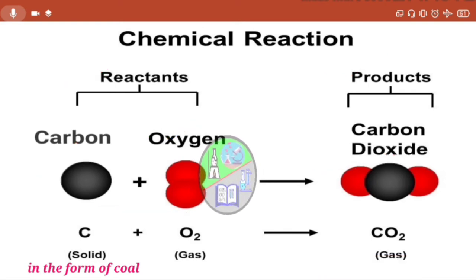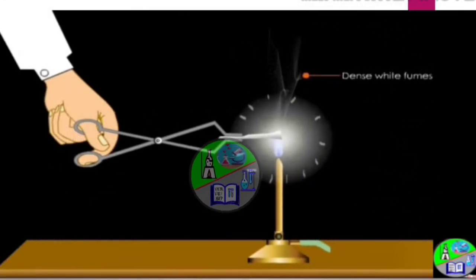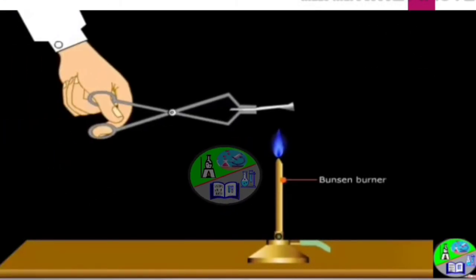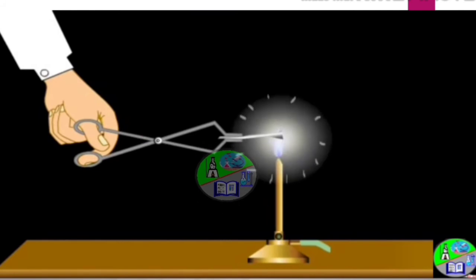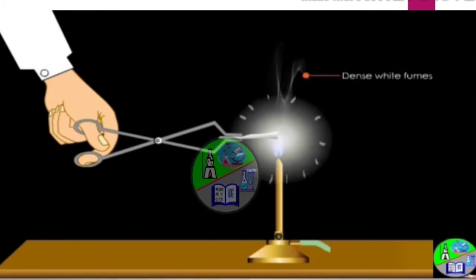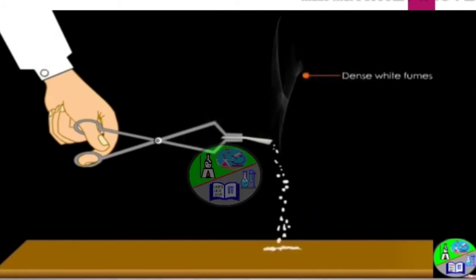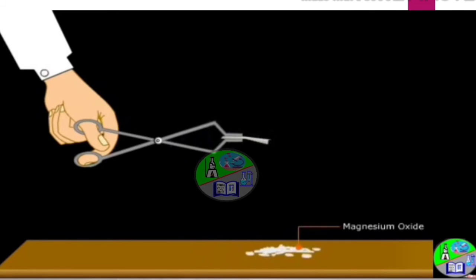So now, let's see an example. Take a piece of magnesium ribbon. Hold one end of the piece with a tong and heat the other end with a Bunsen burner as shown here. It starts burning with a dazzling light and produces dense white fumes. The dense white fumes on cooling forms a white powder called magnesium oxide.